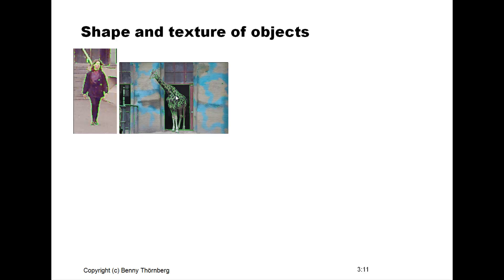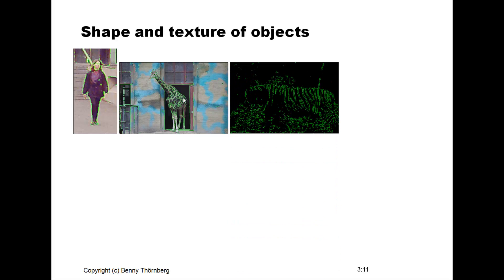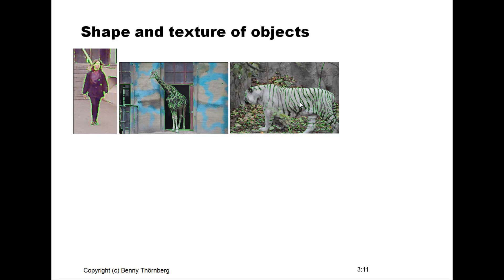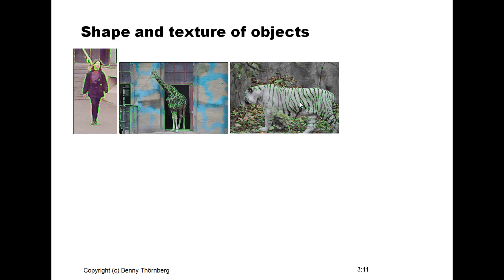The third example is a little bit more difficult perhaps, but it's still an animal. If you look at the shape of the object as well as also the texture, I would say that this is a tiger. Yes, indeed, it was a white tiger.